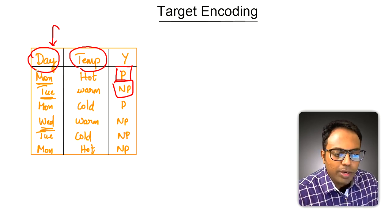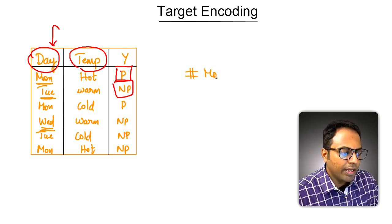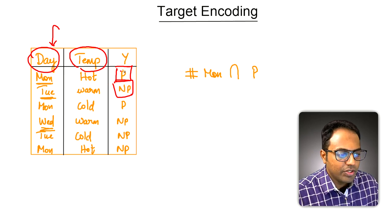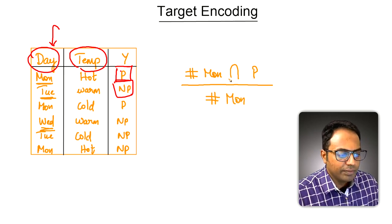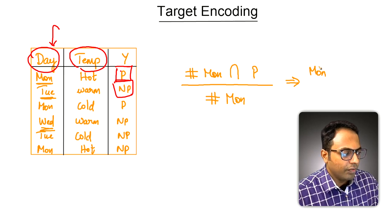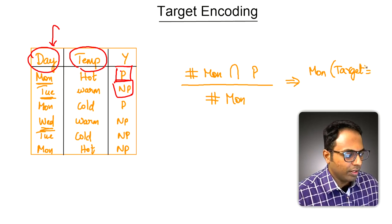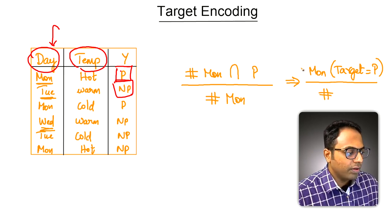To get the numeric equivalent of Monday, we count the number of occurrences of Mondays where the children played, divided by the total number of occurrences of Mondays. You can write this as: count of Mondays where the target value equals 'played' (P), divided by the total count of Mondays.